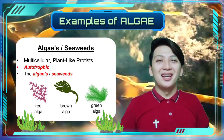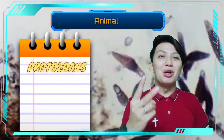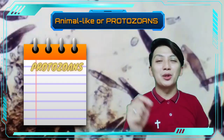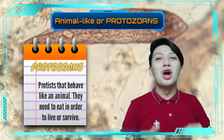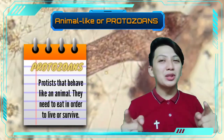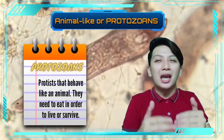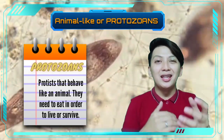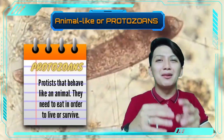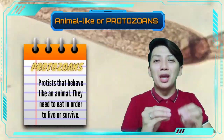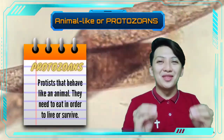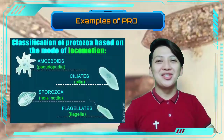The second group of protists is what we call animal-like protists, or what we call protozoans. These animal-like protists behave like animals — they need to eat other organisms for them to be able to survive. Here are examples of these protozoans.